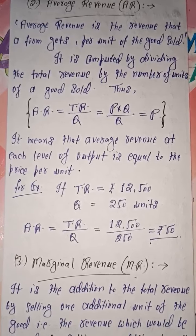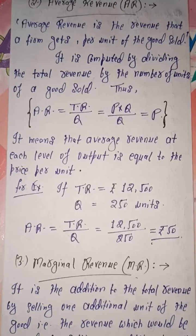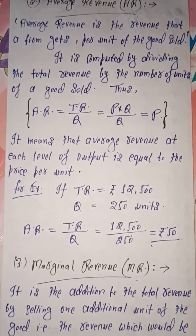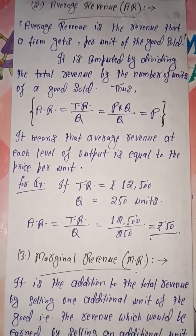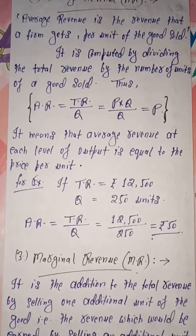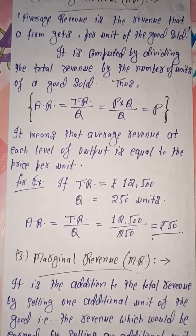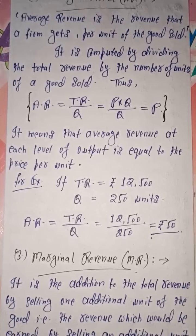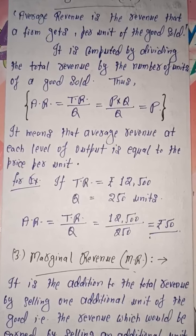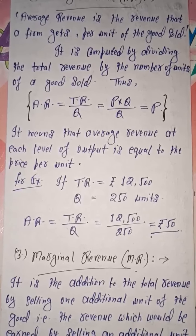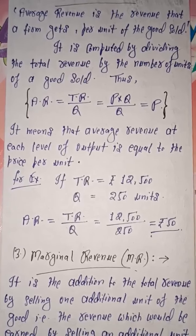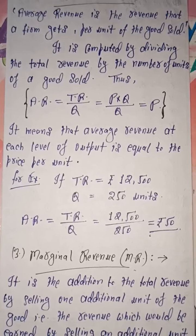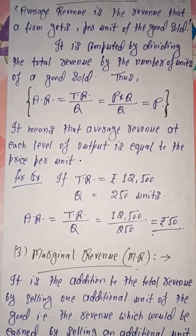Taking the earlier example: the total revenue obtained was Rs. 12,500 and the corresponding output was 250 units. To obtain average revenue in this case, the formula AR = TR / Q gives us: total revenue is 12,500 and Q is 250 units. Dividing gives a value equal to Rs. 50, which is equal to the price per unit. It means average revenue is always equal to price per unit of the good.